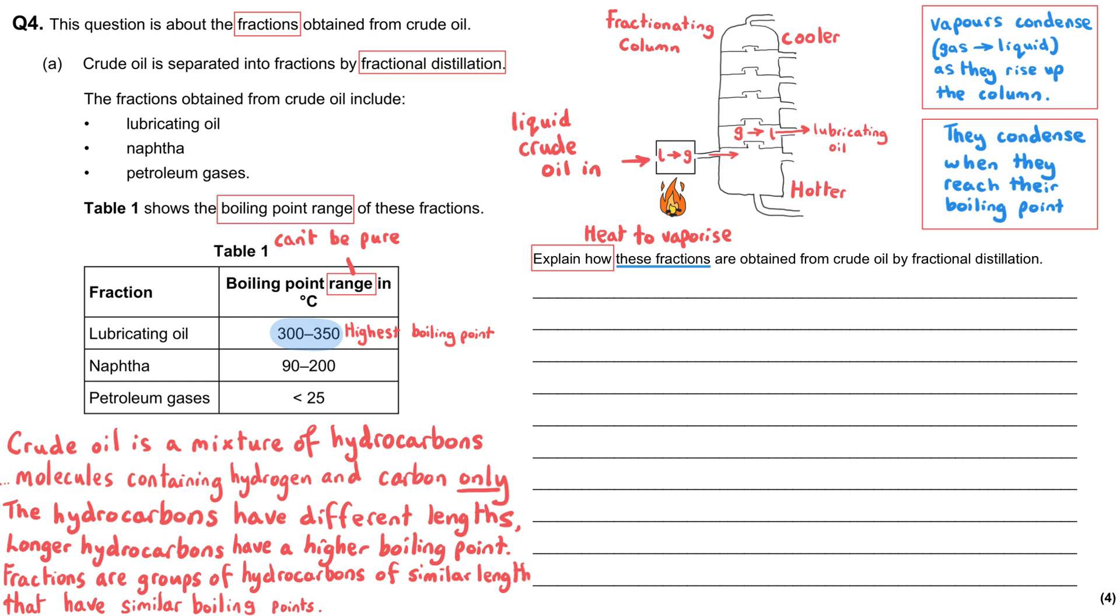That means it will condense lower down than the other two. Because if it's, say, 450 degrees C at the bottom, as it rises to here, it will condense. And then it will come out at this stage at about 300 to 350 degrees C.